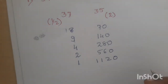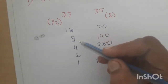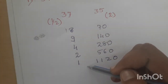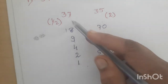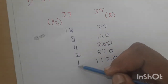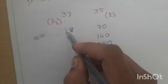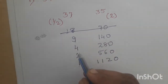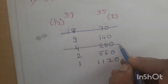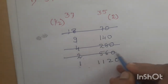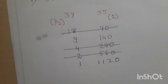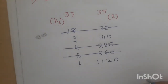Now you need to cross out the rows that have even numbers in the halves column. So wherever you have even numbers in the halves column, you cancel out those rows. Here 18 is even, so cancel out this row. Here 8 is even, so cancel out this row. Here 4 is even, so cancel out this row as well.